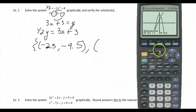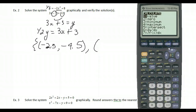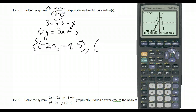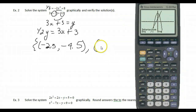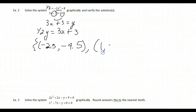For the other point, go to intersect again, move down to the straight line — the shortest distance between two points is a straight line — hit enter three times, and we get (1, 6).